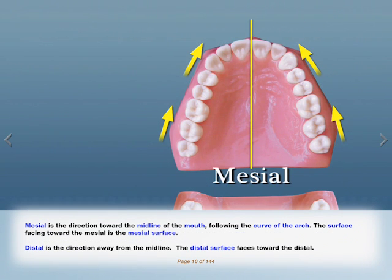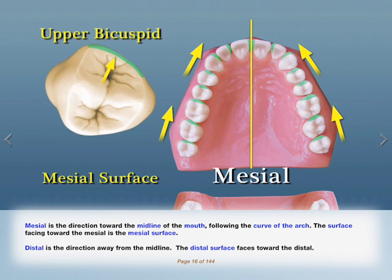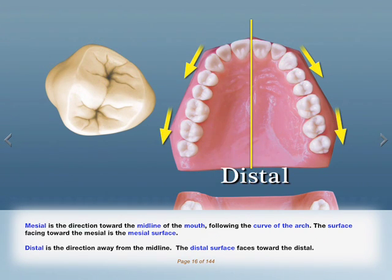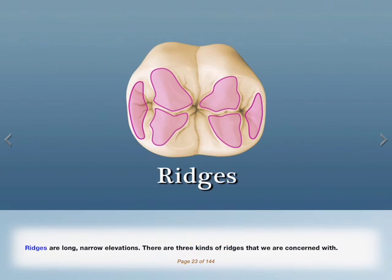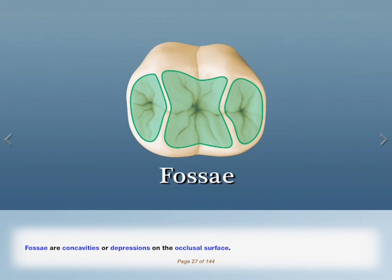The mesial is the direction toward the midline of the mouth, following the curve of the arch. The surface facing toward the mesial is the mesial surface. Distal is the direction away from the midline; the distal surface faces toward the distal. Ridges are long, narrow elevations, and there are three kinds of ridges that we are concerned with. Fossae are concavities or depressions on the occlusal surface.